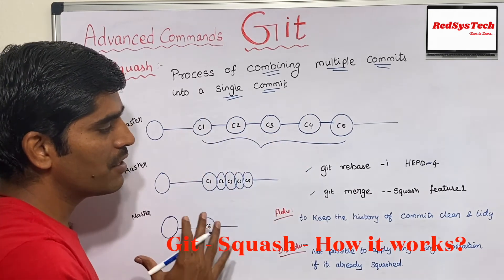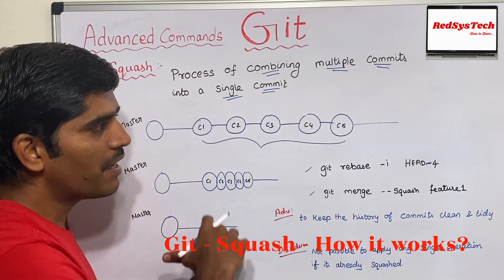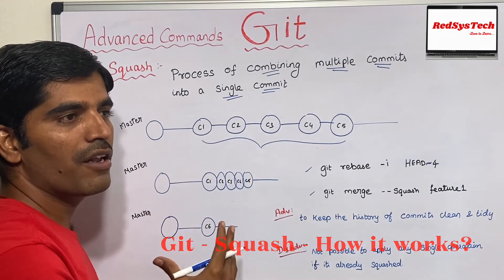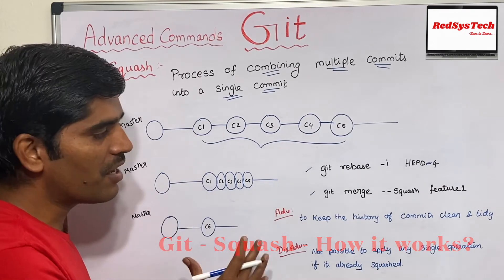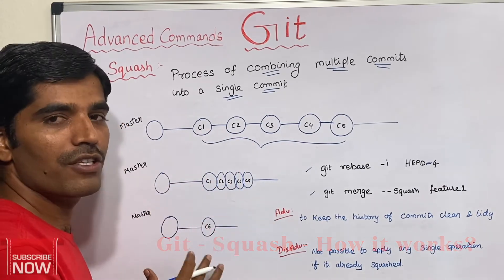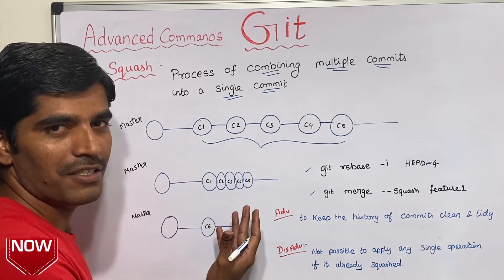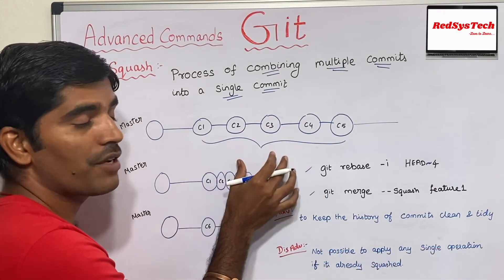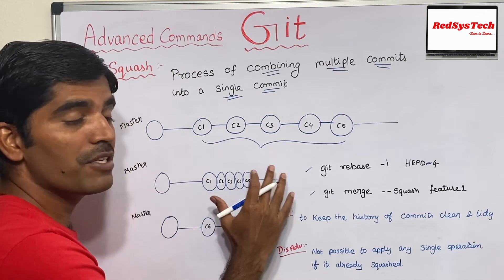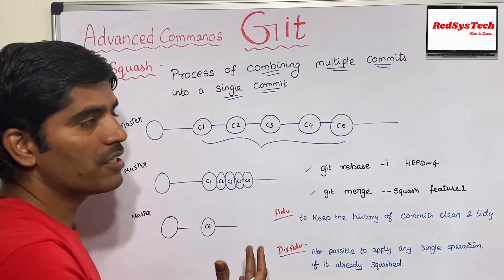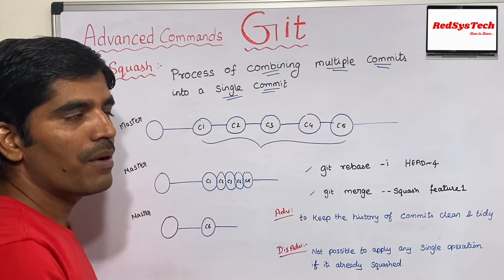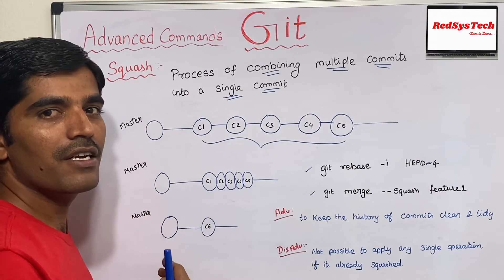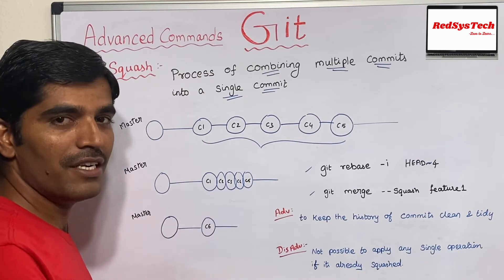The advantage of this feature is that if you want to make your commit history very clean for any review or approval, or if anyone wants to look at it in a clean and tidy way, you can go for squashing. But the biggest drawback is that if you want to apply any single operation to a specific commit, it is not possible, because you are already combining those five commits into one. It is very rarely used, but it's very important to understand when your project grows bigger.